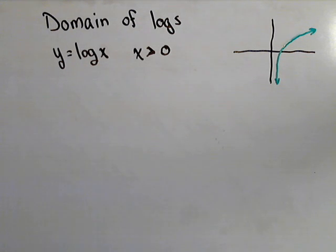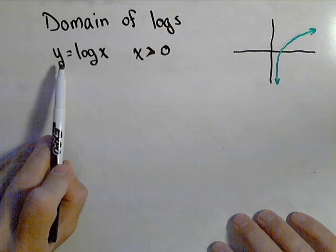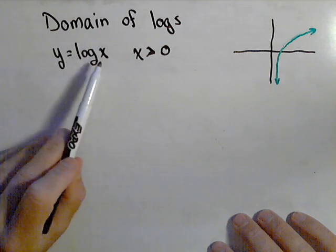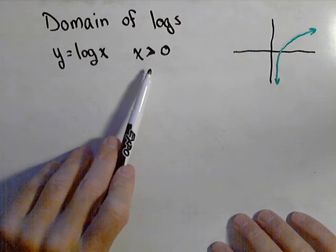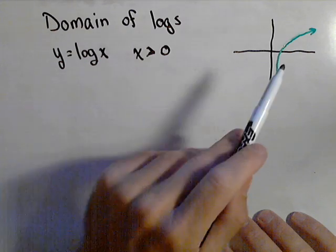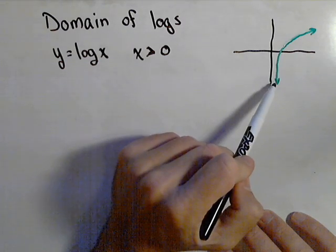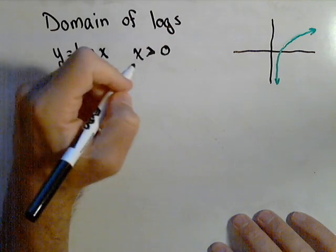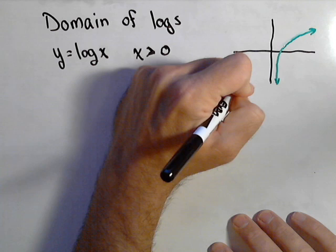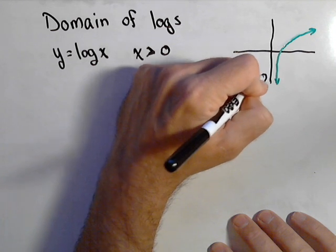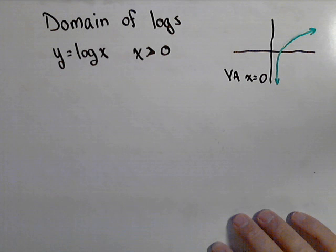In this video, we're going to talk a little bit about finding the domain of a logarithmic function and how to identify its vertical asymptote. In general, if we have y equals log of x or natural log of x or log of any base of x, the domain is that x has to be greater than zero. And the graph looks something like this. So it's only got a domain of positive values and it's got a vertical asymptote at x equals zero. So the y-axis is a vertical asymptote.